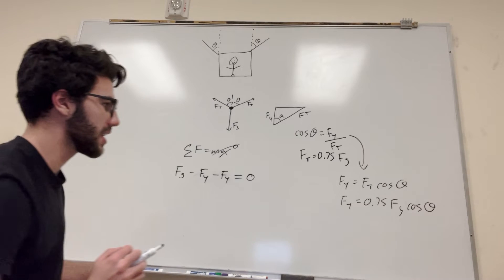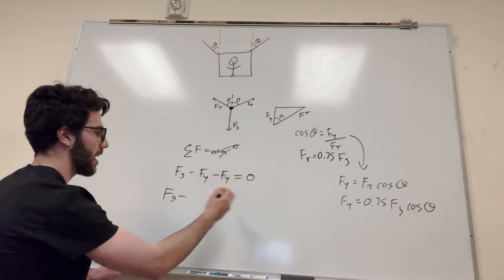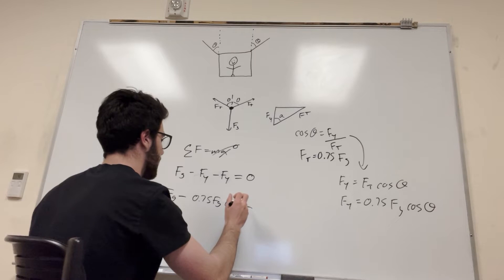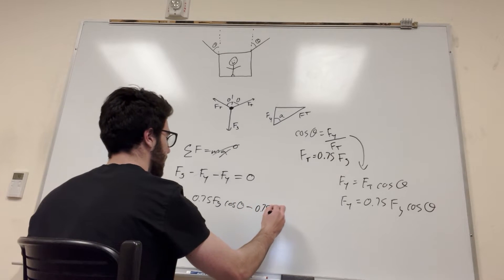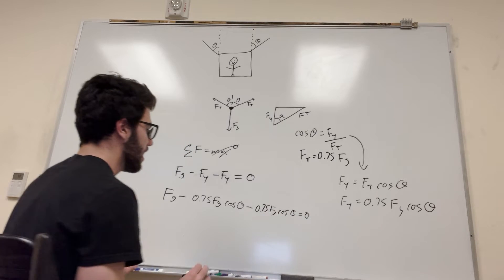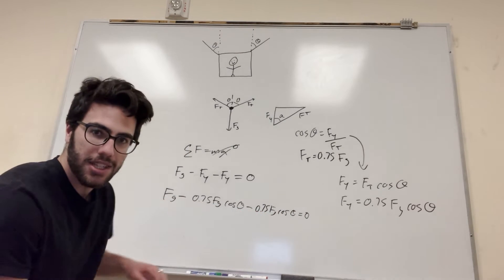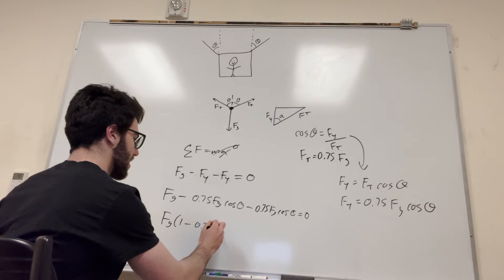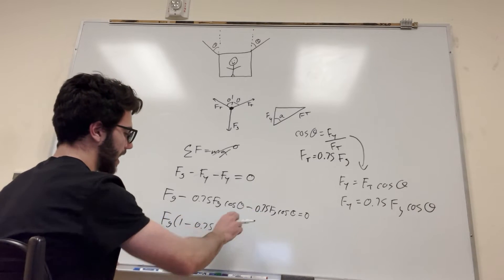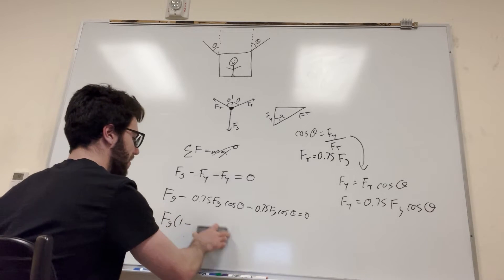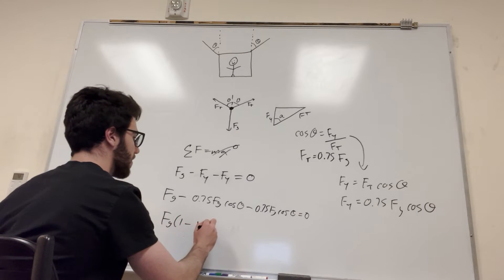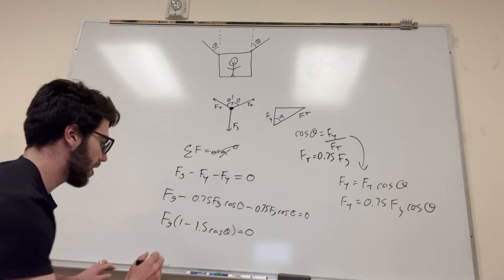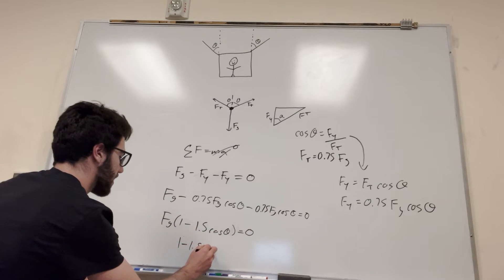All right, now we go ahead and plug this all in. So force of gravity minus force of y, so this is 0.75 force of gravity cosine of theta minus 0.75 force of gravity cosine of theta is equal to 0. And you'll notice here that we have force of gravity in each one of these. So you can actually factor it out. Watch this. You can go force of gravity, and it'll be 1 minus 0.75 cosine of theta, and then you're going to be doing that again. It's just subtracting 0.75 by 0.75. So that should be 1.5 cosine of theta is equal to 0.